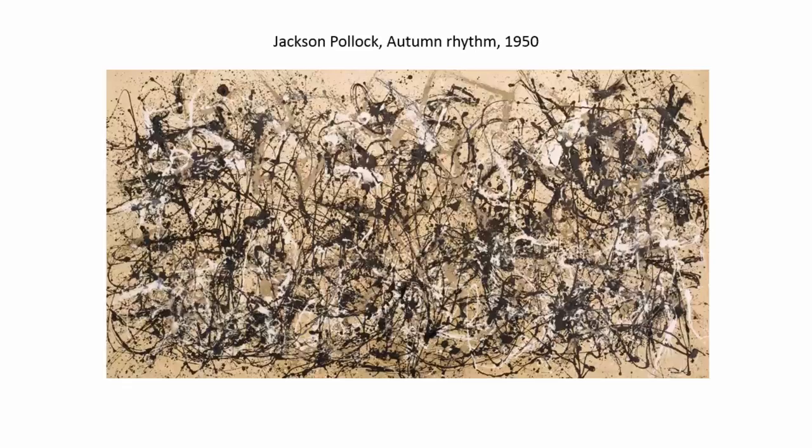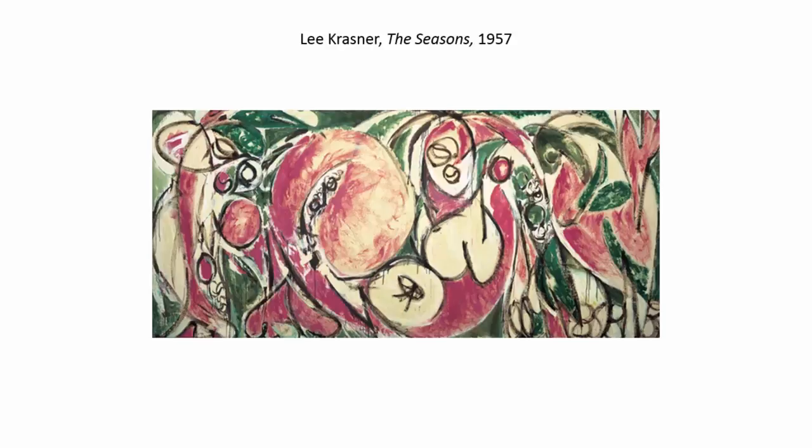Lee Krasner was a little bit in the shadow of Jackson Pollock because he was the really famous one, but she was a very accomplished artist herself. This is The Seasons — still abstract expressionism. You can see some fruit perhaps and some biomorphic and natural type of forms, some greenery and certainly some kind of fruit.